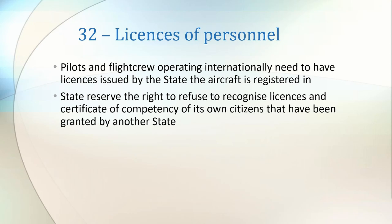Article 32 covers crew licensing. Pilots and flight crew operating internationally need to have licenses issued by the state the aircraft is registered in. In practice, there are some interesting cases such as with EASA, where licenses are common across all member states. Additionally, this also means that aircraft can be flown in a state you don't have a valid pilot's license in, if you have an aircraft registered in your state available to fly.